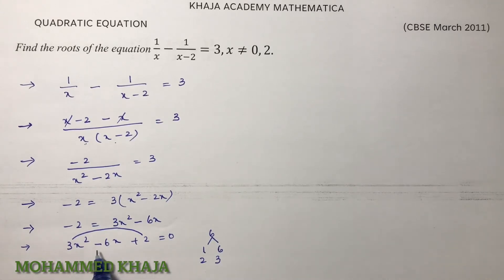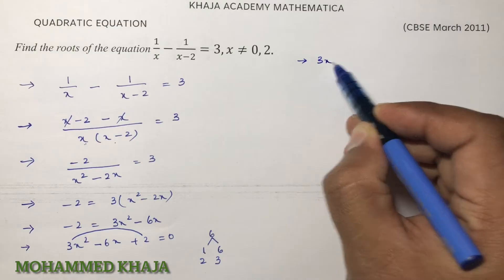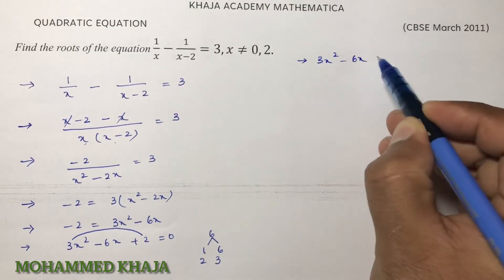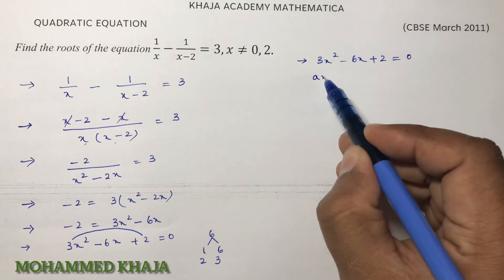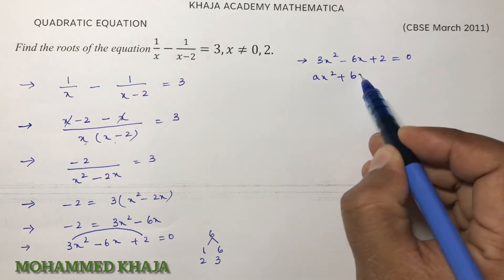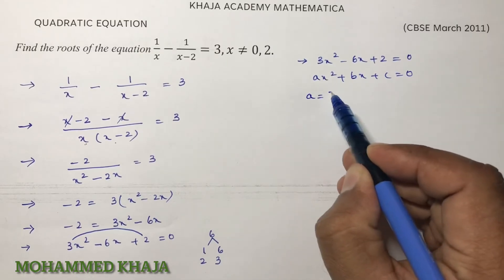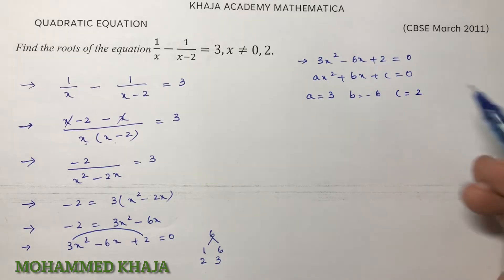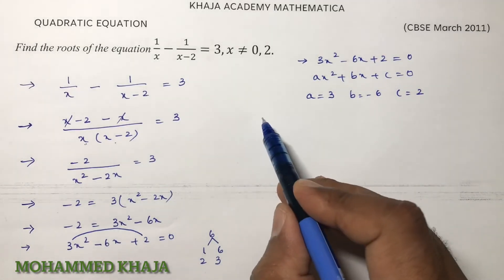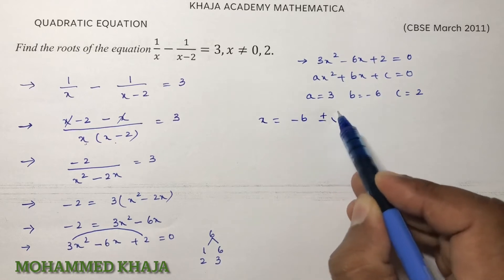So now you need to use the quadratic formula. Write the equation one more time: 3x² - 6x + 2 = 0. Standard equation is ax² + bx + c = 0. a value is 3, b is -6, c equals 2.